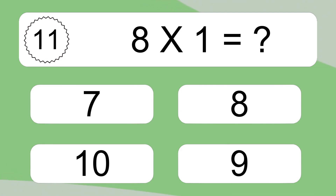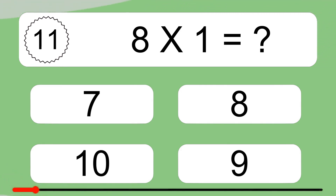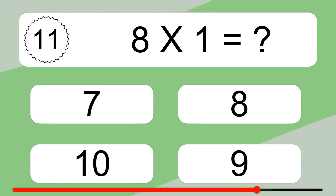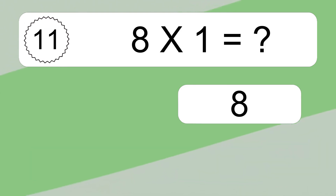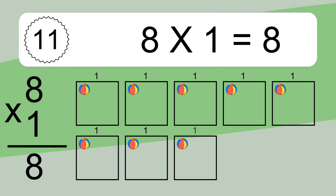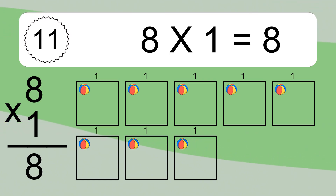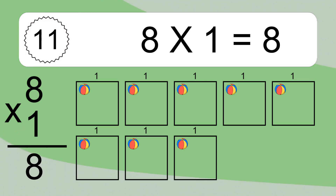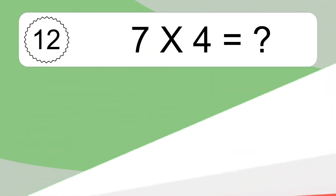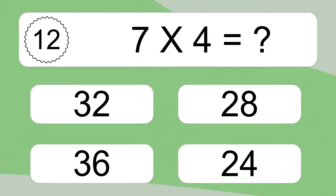8 times 1 equals what? We have 8 boxes, and each box has 1 colorful ball inside. If you count all the balls in all the boxes together, you will have 8 times 1 balls. This equals 8 balls.